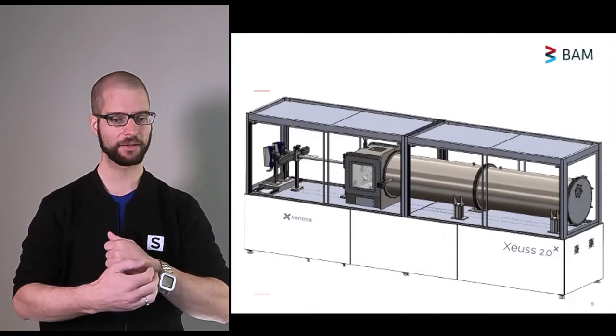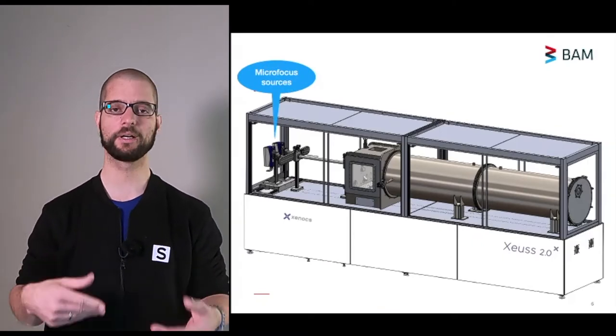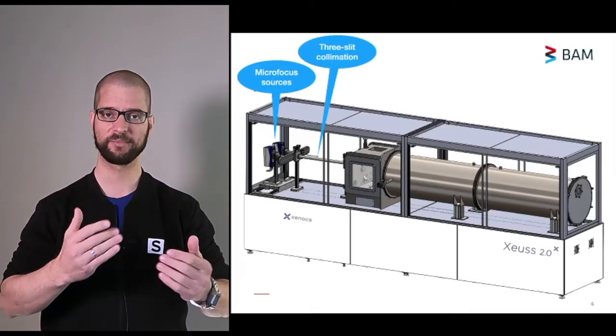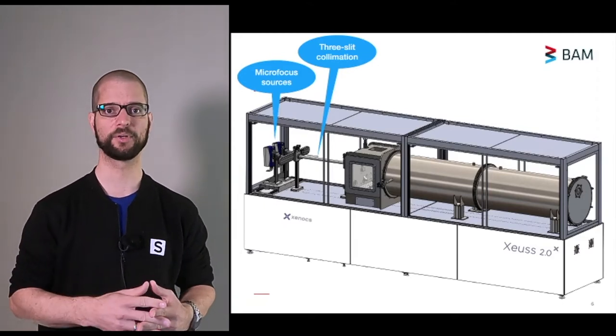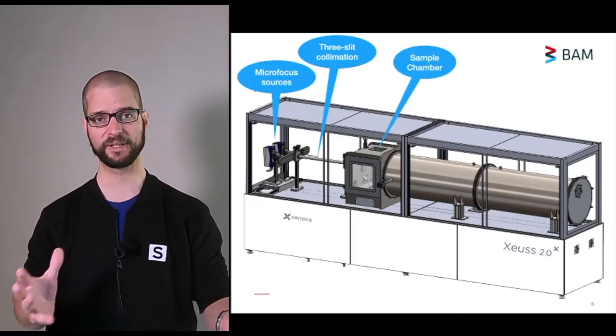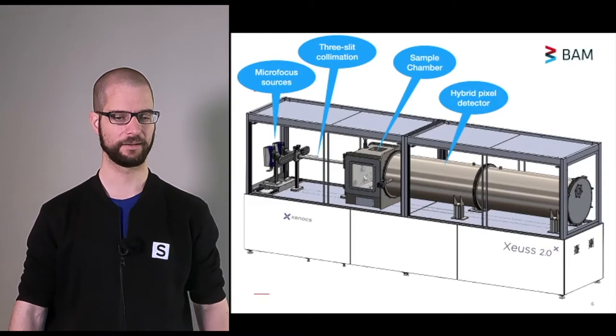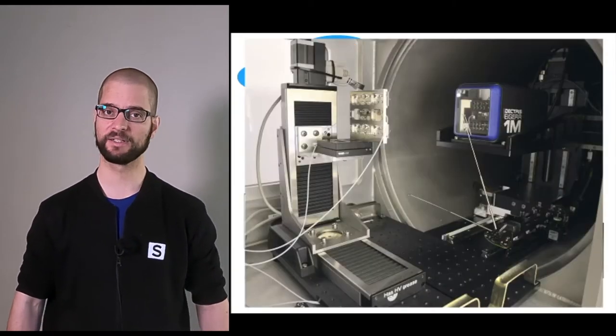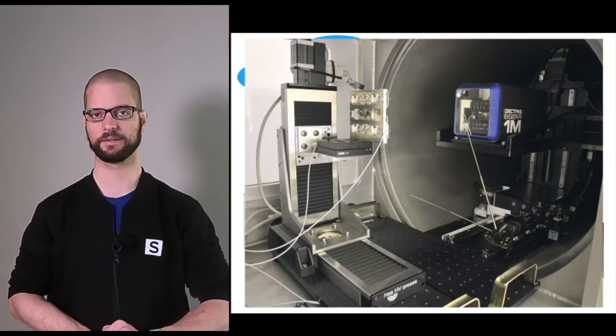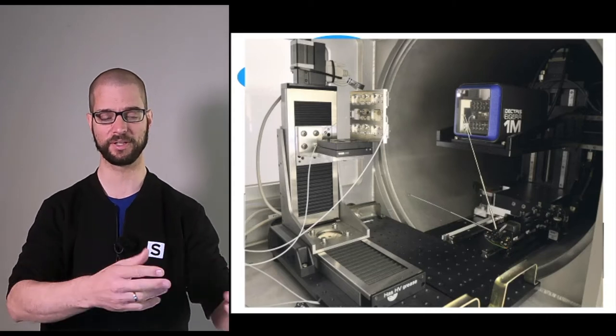The small angle scattering machines themselves are also not too complicated. All of them start with an x-ray source of one form or another, either a microfocus source or a synchrotron. A collimation section which cuts the beam down, in our case anywhere between 0.2 and 0.5 millimeters. We then have a very large sample chamber, in our case this is completely evacuated to reduce the background, and we have a hybrid pixel detector in a vacuum tank. We have a lot of space inside our sample chamber as well, just in case you want to try some nice in-situ experiments.